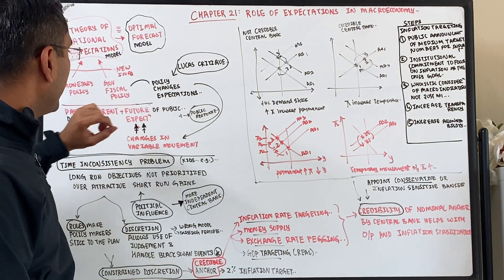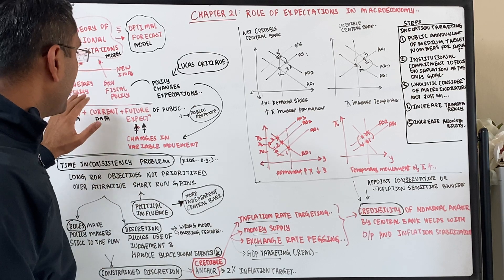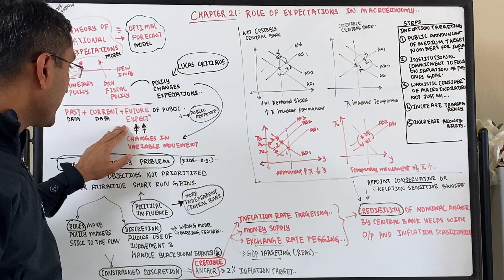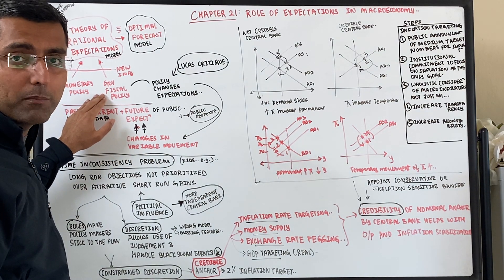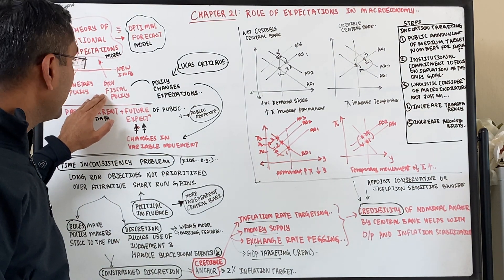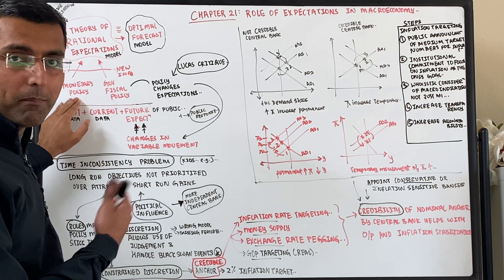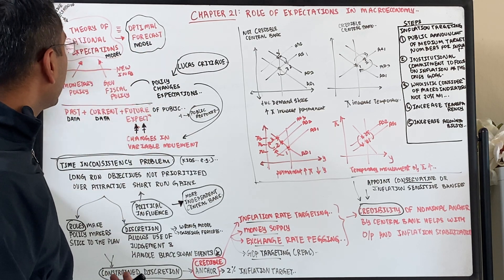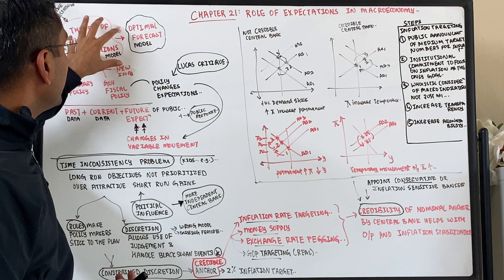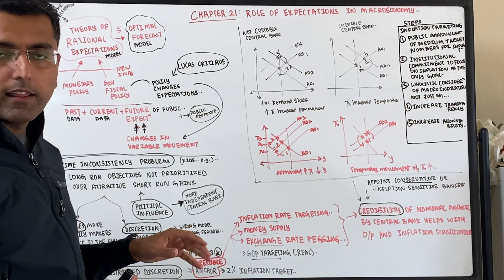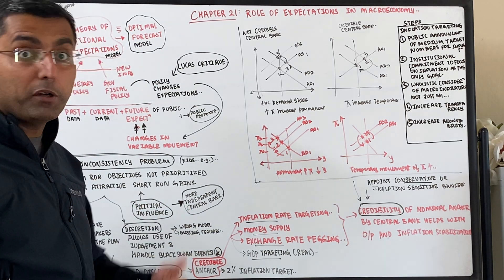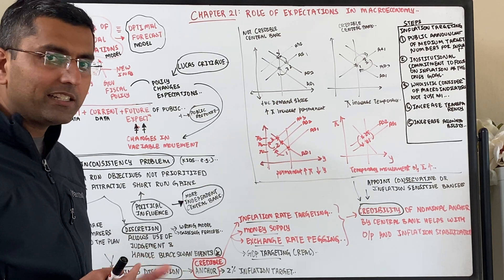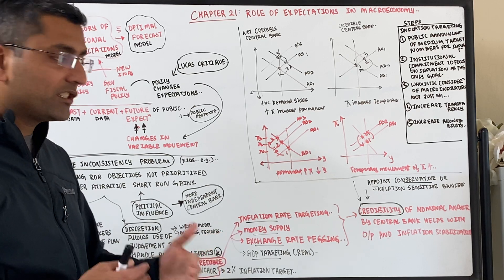This rational expectations model looks at past inflation data, current data, expected future changes, government fiscal policy including budget deficits, and central bank monetary policy including interest rates. When you combine all of these, you get the theory of rational expectations — a model that is the most accurate in predicting the future. It won't always be right, but it will be much better than just looking at past data as the adaptive expectations model did.